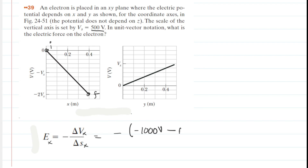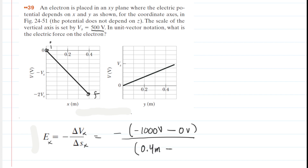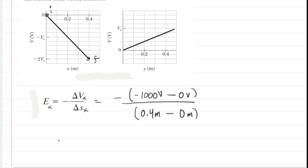Subtract your initial potential, which is 0 volts, and then divide that by our final position, which we can see from the graph is 0.4 meters, then subtract your initial position, which is 0 meters. You'd pick up your calculator and simplify this, and you would see that the electric field in the x-direction is 2,500 newtons per coulomb.